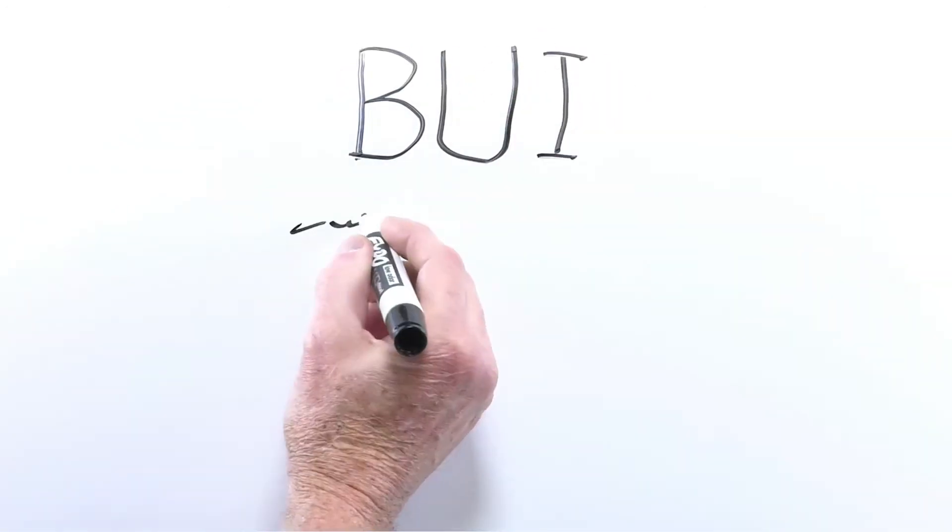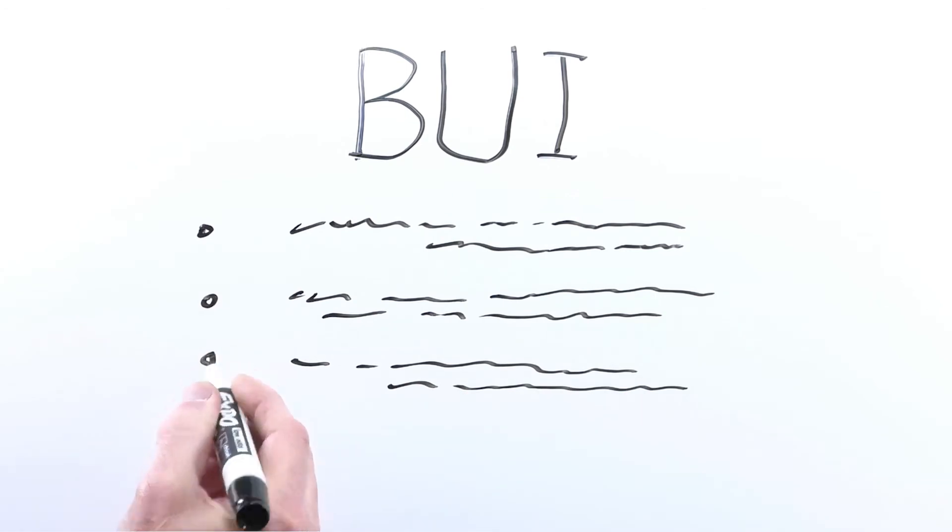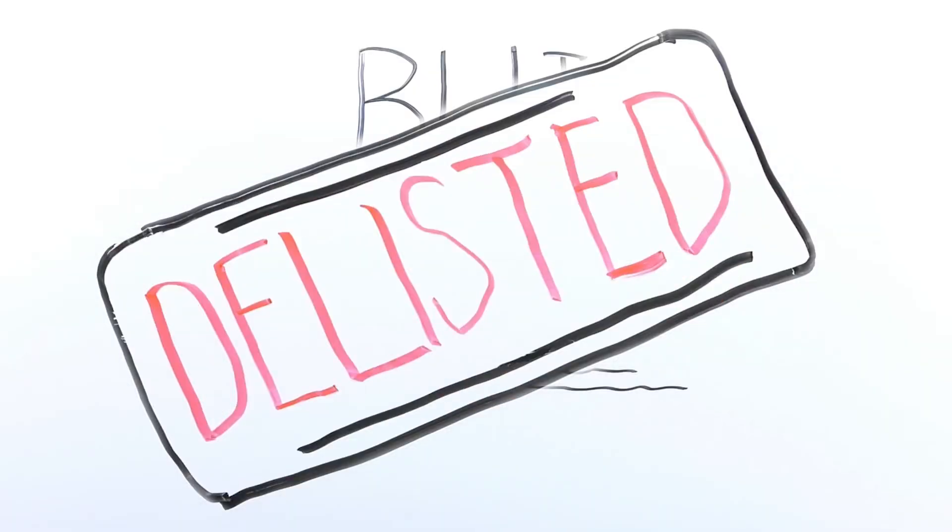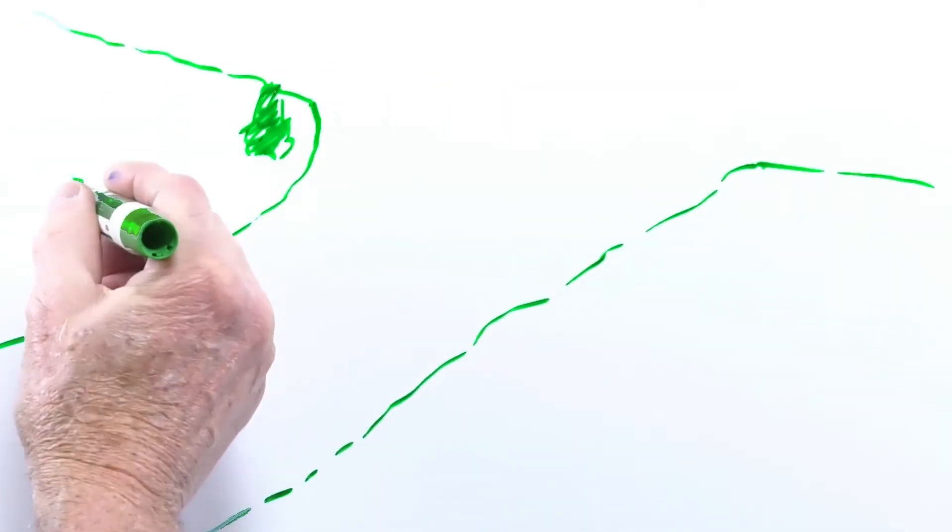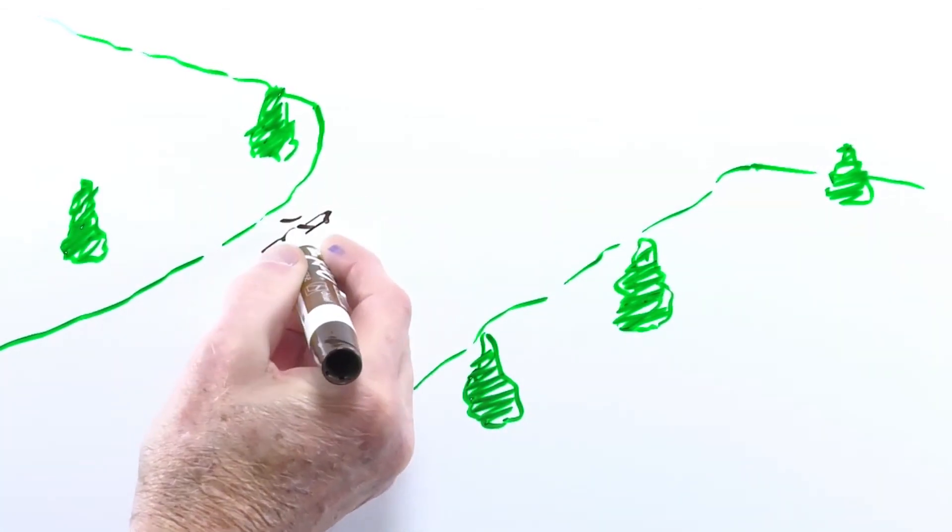Once all BUIs are removed, we delist the AOC. But now what? An area may be brought up to snuff, but still not be all that it can be.